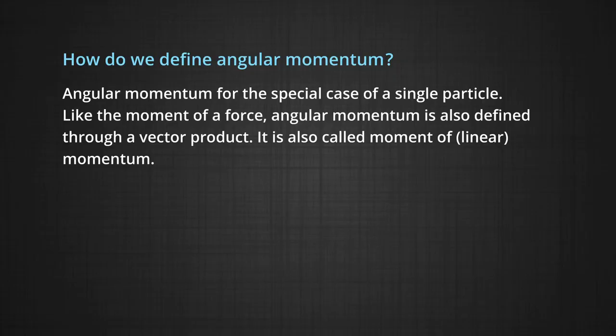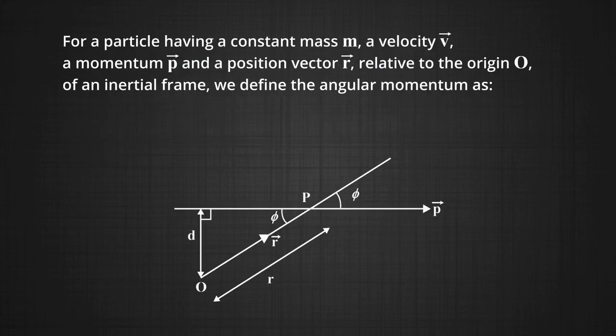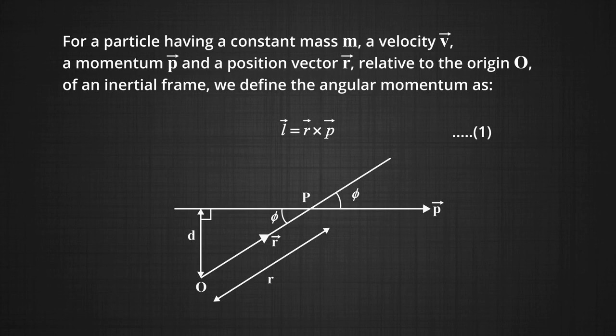We will first define angular momentum for a special case of a single particle. Like the moment of a force, angular momentum can also be defined with the help of a vector product. For a particle with constant mass m and velocity v, linear momentum p, and position vector r relative to some origin O in an inertial frame of reference, we can define angular momentum as L vector equals r vector cross p vector. Hence it can be defined as a cross product of position vector and linear momentum vector.